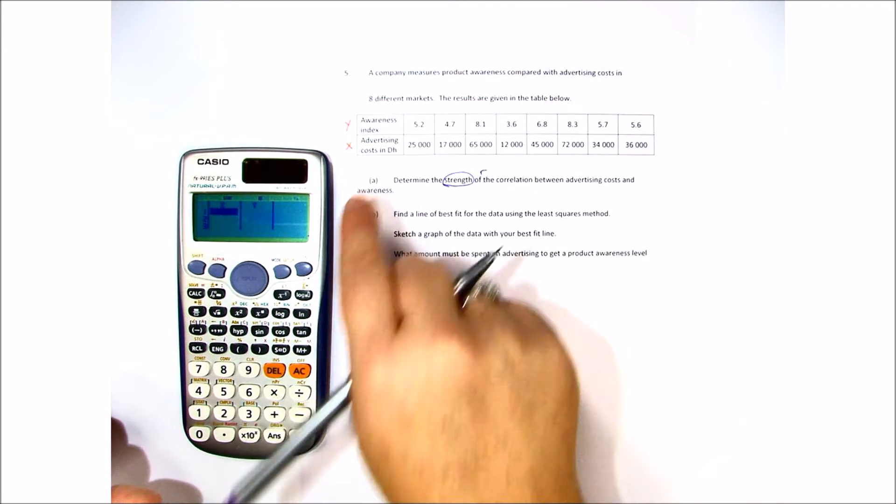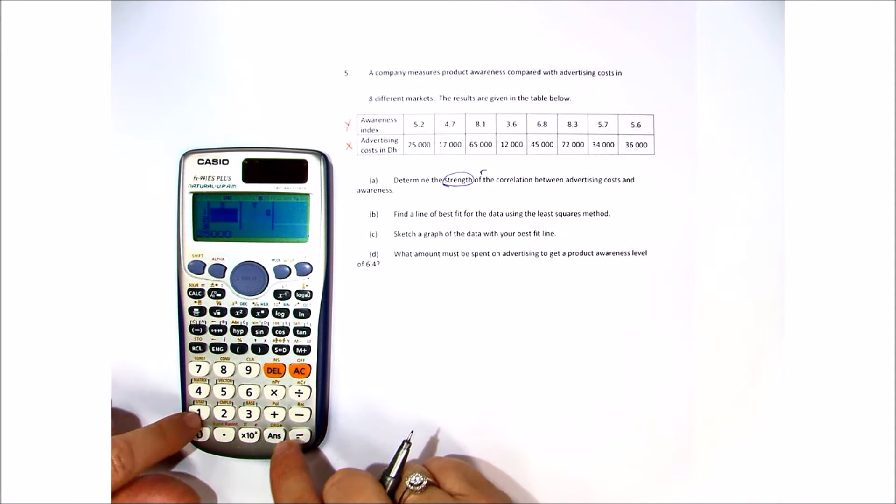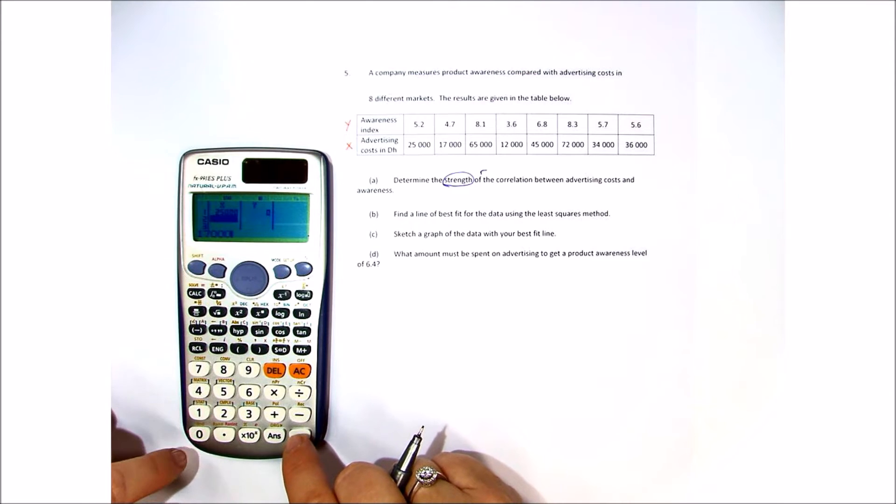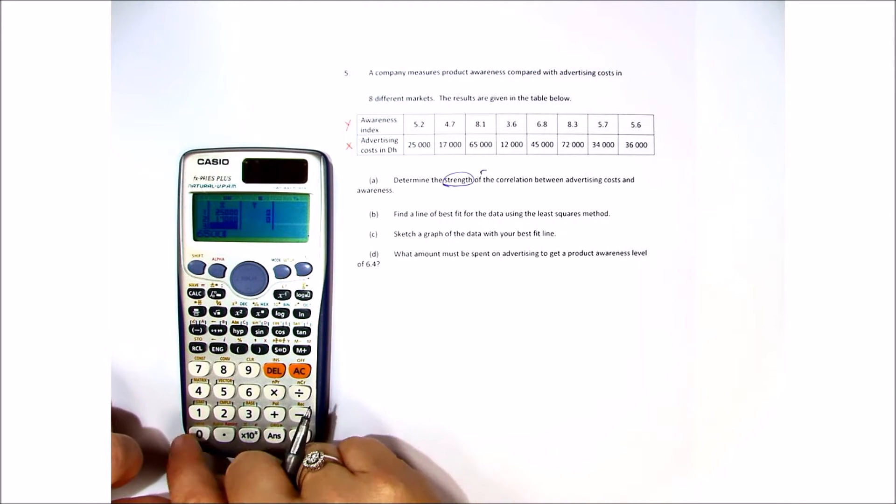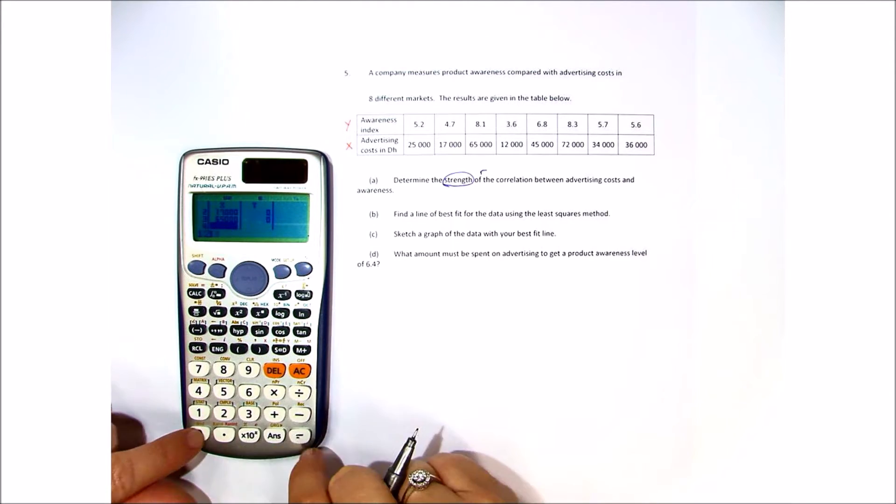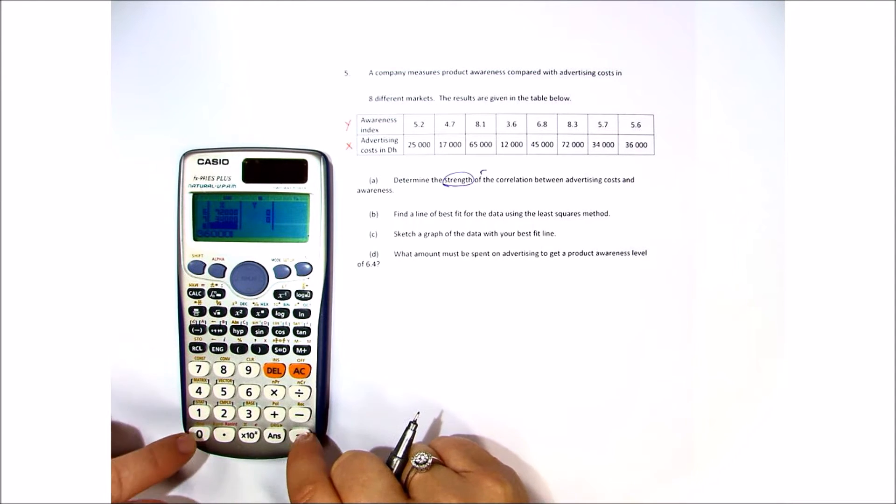Now our X: 25,000, 17,000, 65,000, 12,000... go ahead and put this data in your calculator now.